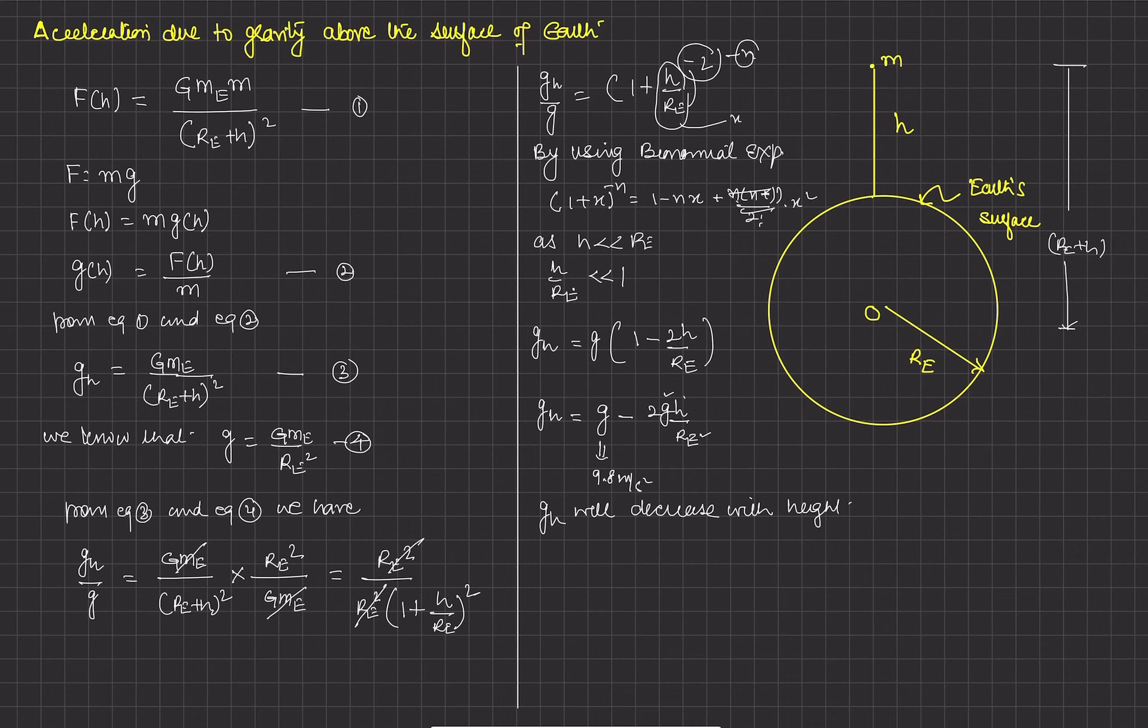If we want to find the percentage decrease in gravity, percentage decrease in value of g will be: (gravity on the surface of earth minus gravity at a height h) upon g, cross 100. This gives us delta g upon g cross 100, where dash represents per and 100 becomes percent.